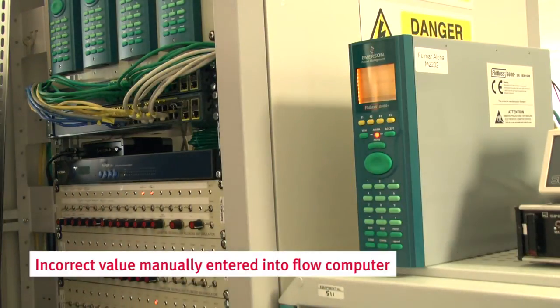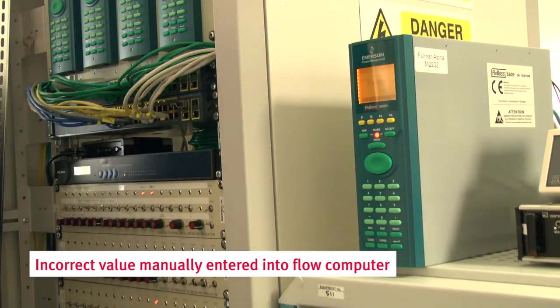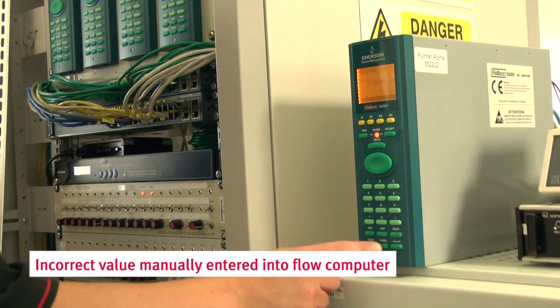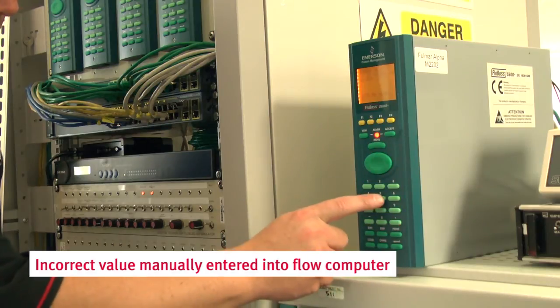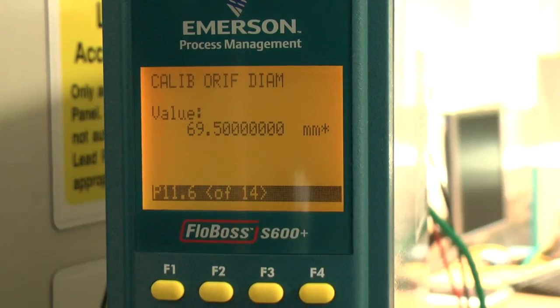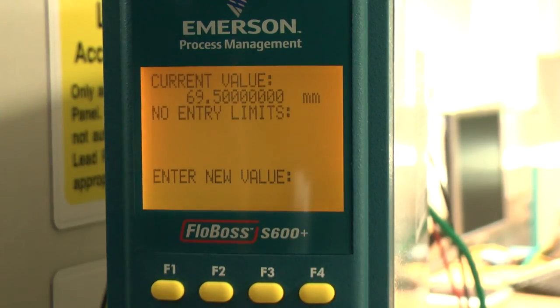Another example: it is a commonly reported occurrence that keypad data can be wrongly entered into a measurement system's flow computer due to manual error. In this case, the orifice diameter is entered as 69.5 millimeters instead of 65.9 millimeters, a typical finger trouble error.